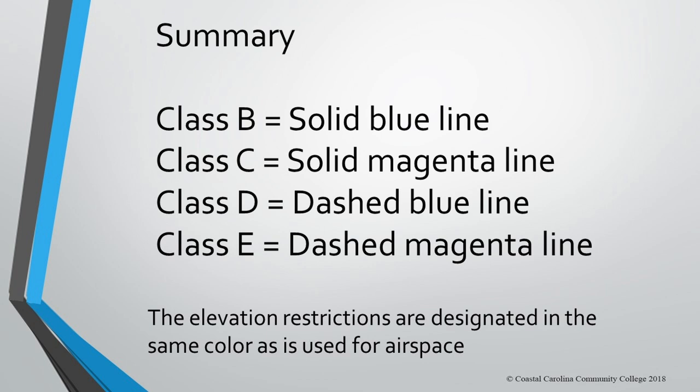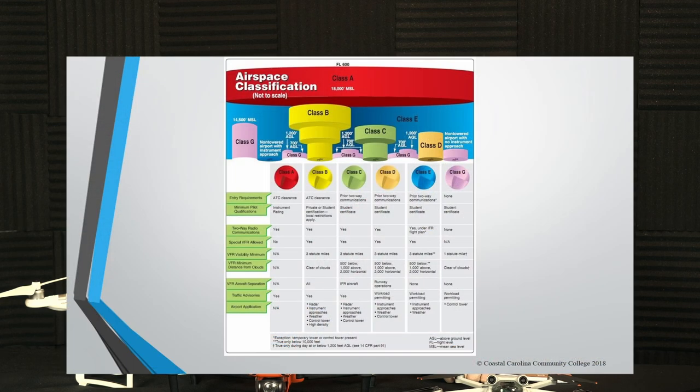Here's a review: Class B is solid blue, Class C is solid magenta, Class D is dashed blue, Class E is dashed magenta. The FAA puts out a chart available all over the internet that talks about the various classifications of airspace and some of the sizes — I would print this out and make sure you're comfortable with the content. A question you might see: what class airspace does not require approval upon entering? Or on a VFR sectional chart, a solid magenta line surrounding an airport means what?